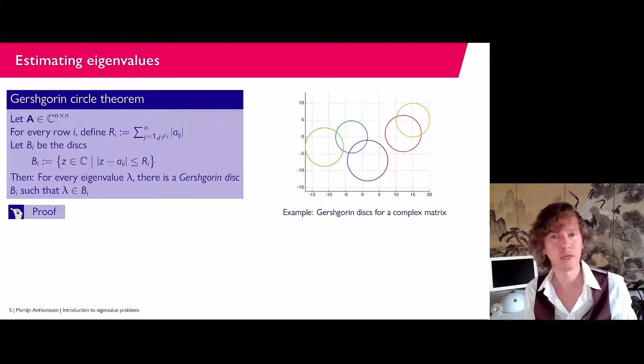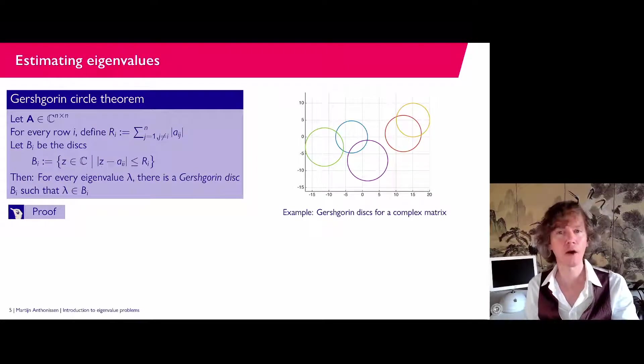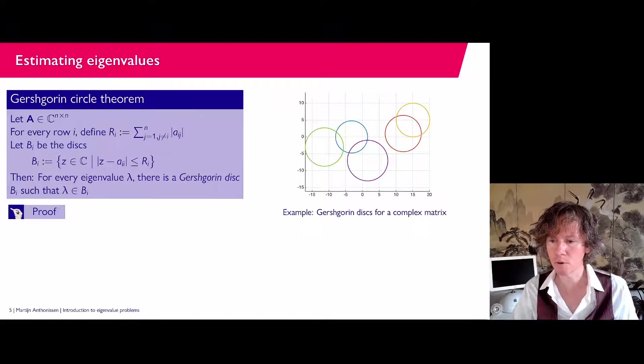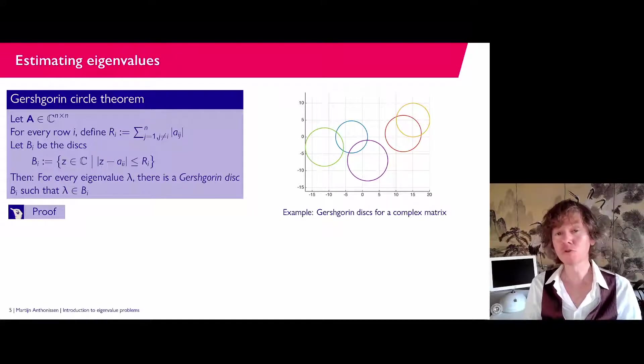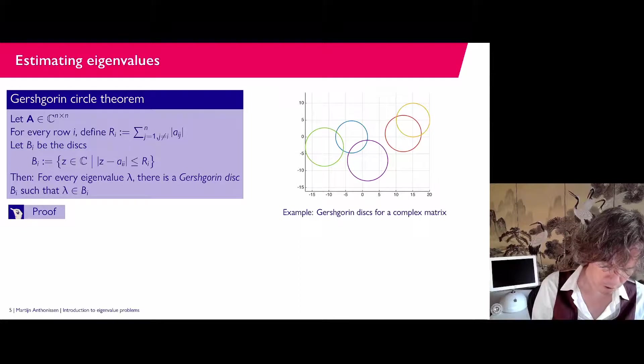I will give a slightly sharper version on the next slide. But here it just says if you have an eigenvalue, I can find a disk that contains it. So let's see if we can prove it because it says here that we will prove this theorem. So what I'm going to do is I'm going to take an eigenvalue and then I'm going to find the disk that contains it.